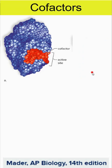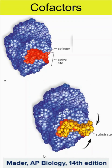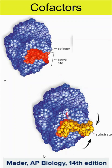We also have cofactors that can get involved. The cofactor is shown in red here, and it creates the active site. If we had this substrate, it wouldn't fit onto the blue without the red. So even though we are constructing through our genetics all of the correct order for these amino acids to create the protein enzyme, we still need vitamins in order to create the correct shape for the enzyme.